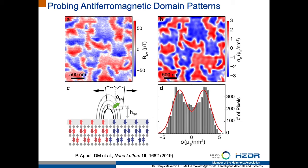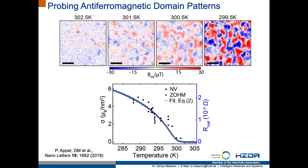The strong advantage of NV microscopy is that it provides access not only to the quantitative stray field distribution over the sample, but also to the magnetization of the sample. You can monitor the change of contrast as a function of temperature, and get access to the transition temperature from antiferromagnetic to paramagnetic state by determining when the contrast from the antiferromagnetic domain pattern disappears. In our case, this temperature is about 302 Kelvin, which is a couple of Kelvin smaller than for high-quality single crystalline chromium oxide.